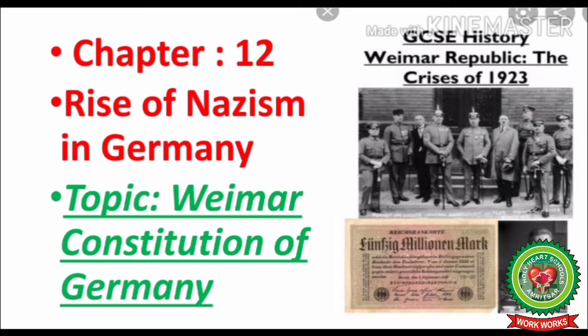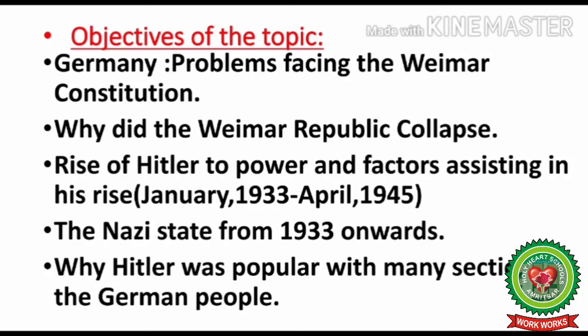Good morning everyone. Today we are going to start chapter 12 of your book, Rise of Nazism in Germany. In this module we will discuss the Weimar constitution that was set up in Germany after the First World War. The objectives of the topic are: Germany's problems facing the Weimar constitution, why did the Weimar Republic collapse, the rise of Hitler to power and factors assisting his rise from January 1933 to April 1945, and the Nazi state from 1933 onwards.